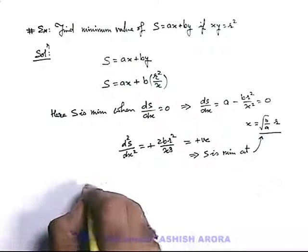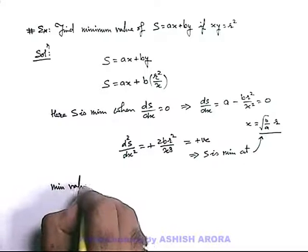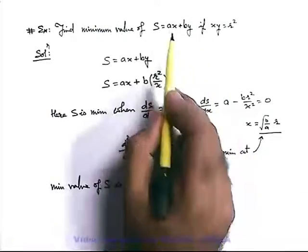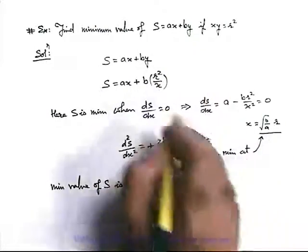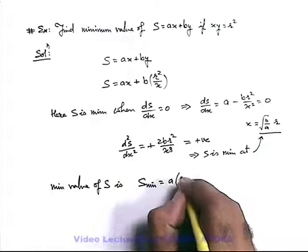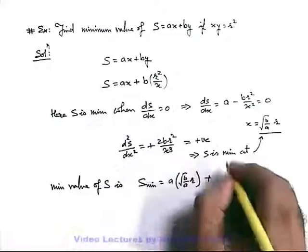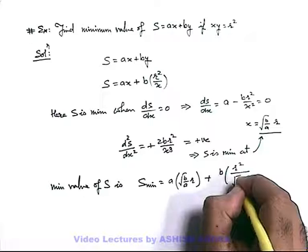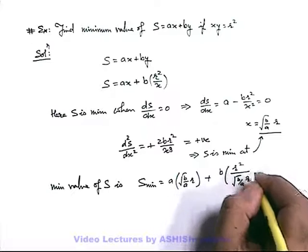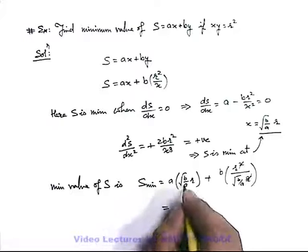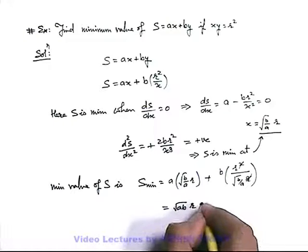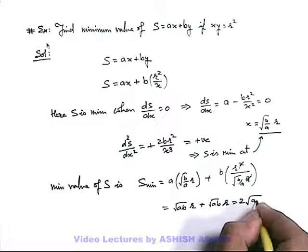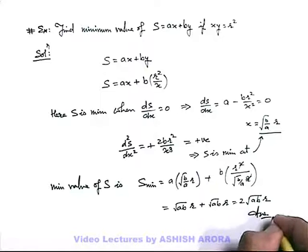If we wish to find the minimum value of s, we substitute x equals root of (b/a) times r into the expression. It becomes a times root(b/a) times r, plus b times r squared divided by root(b/a) times r. Simplifying, one r cancels, giving root(ab) times r plus root(ab) times r, which equals 2r times root(ab). This is the answer.